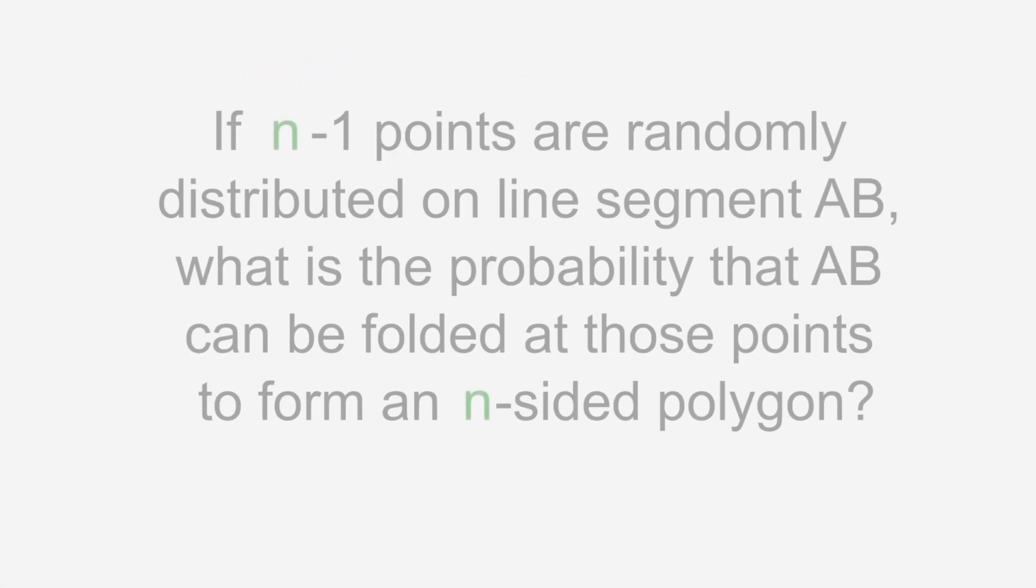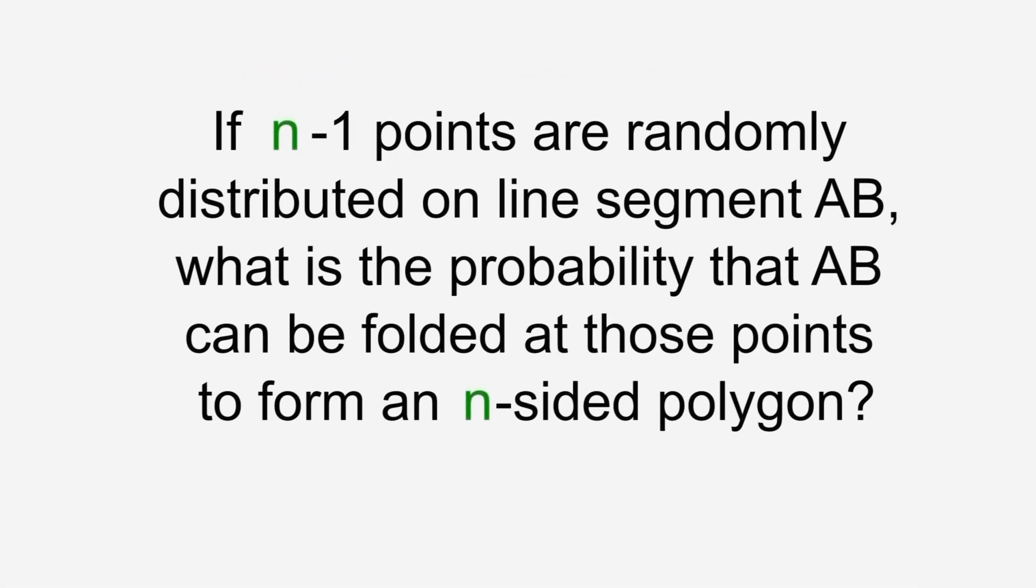Or, more generally, if n-1 points are randomly distributed on line segment AB, what is the probability that AB can be folded at those points to form an n-sided polygon?